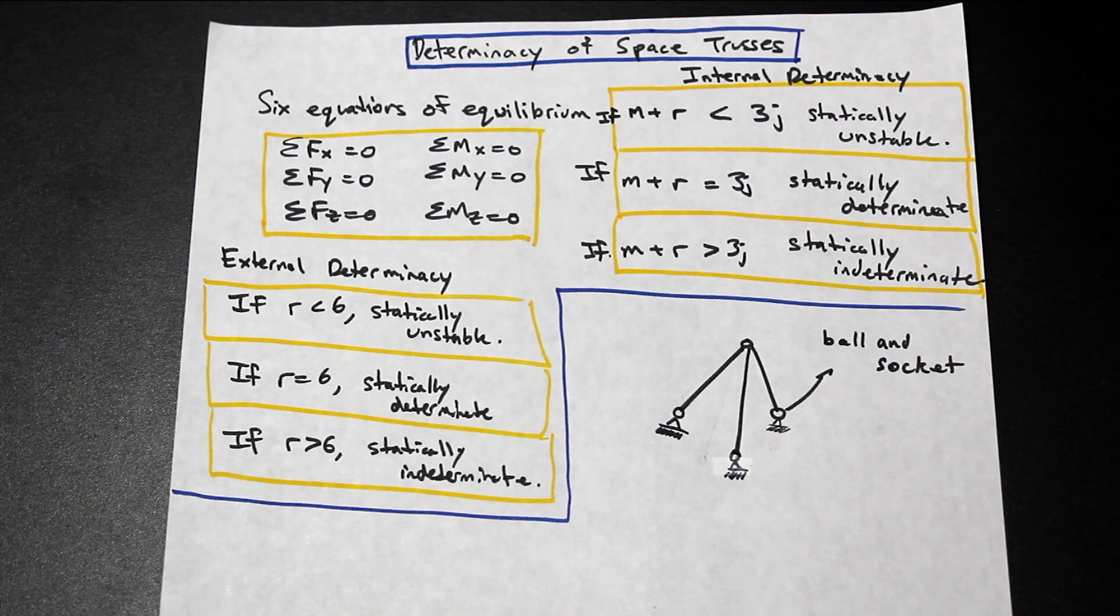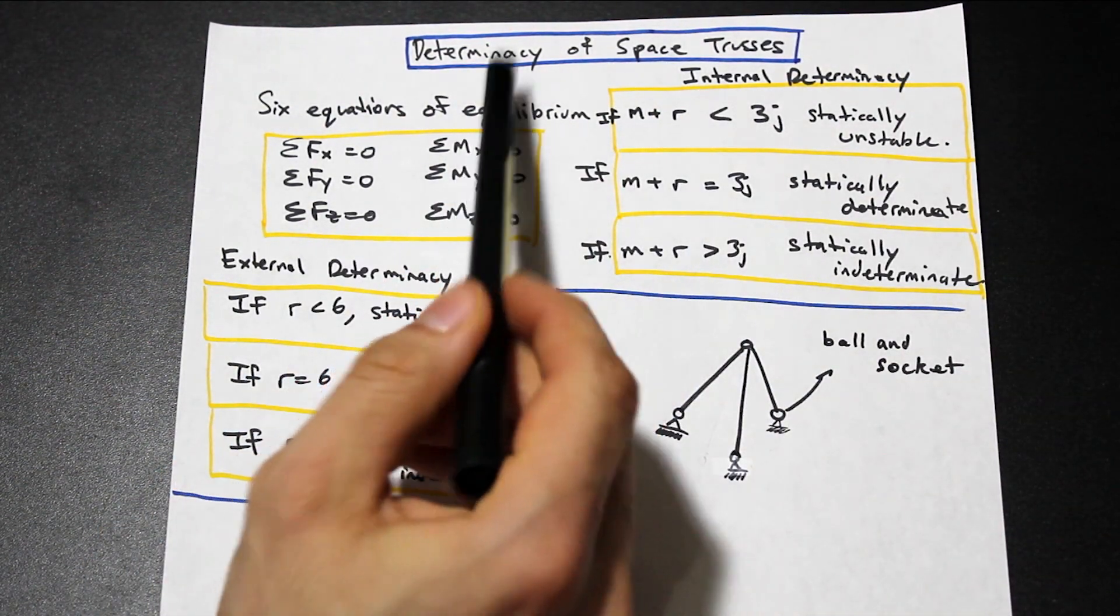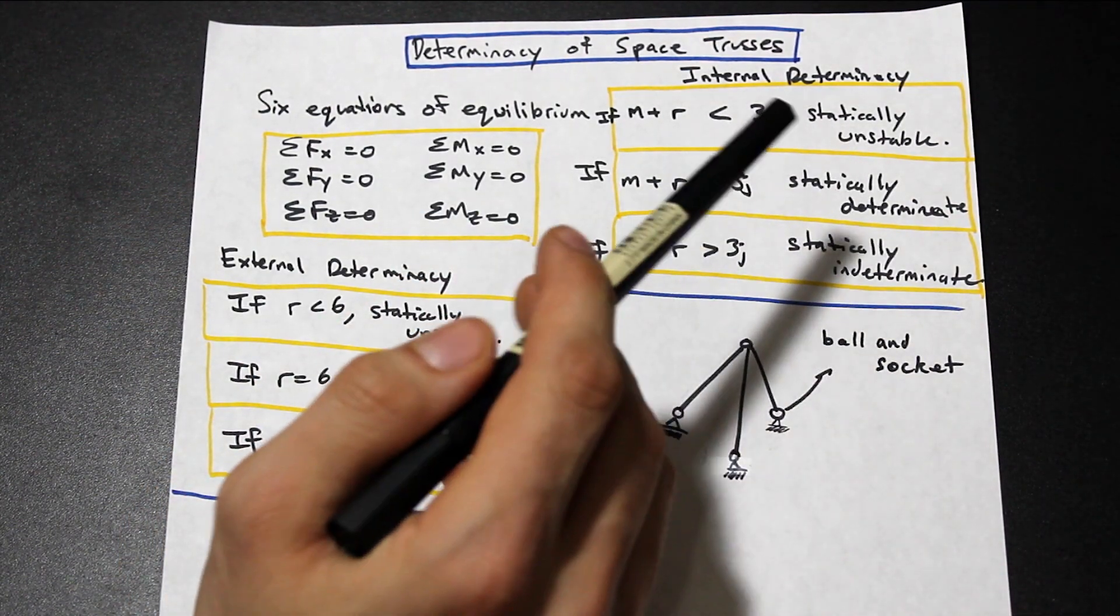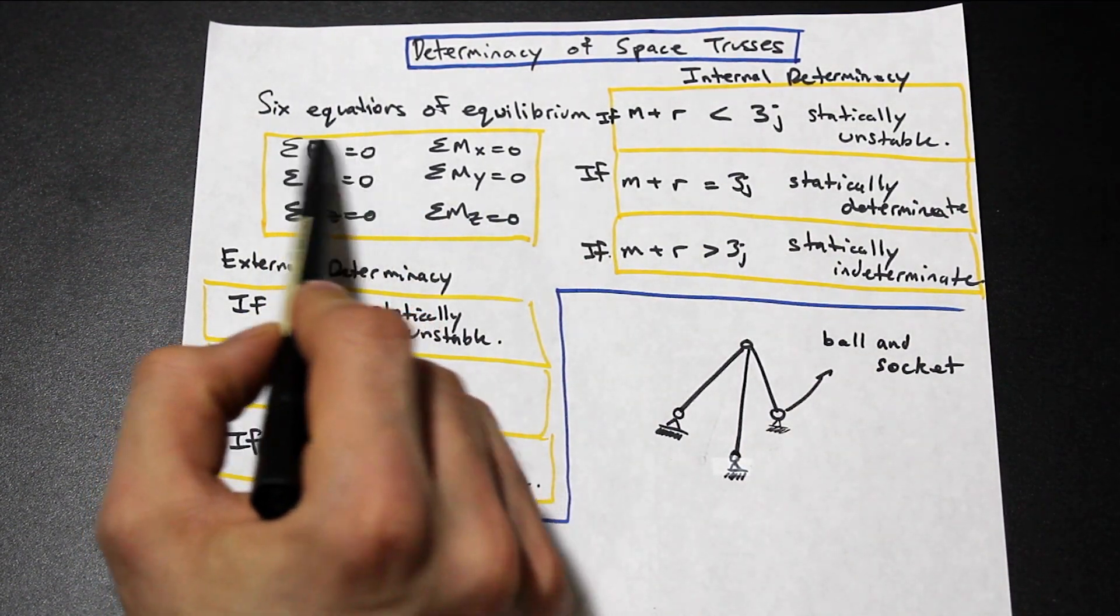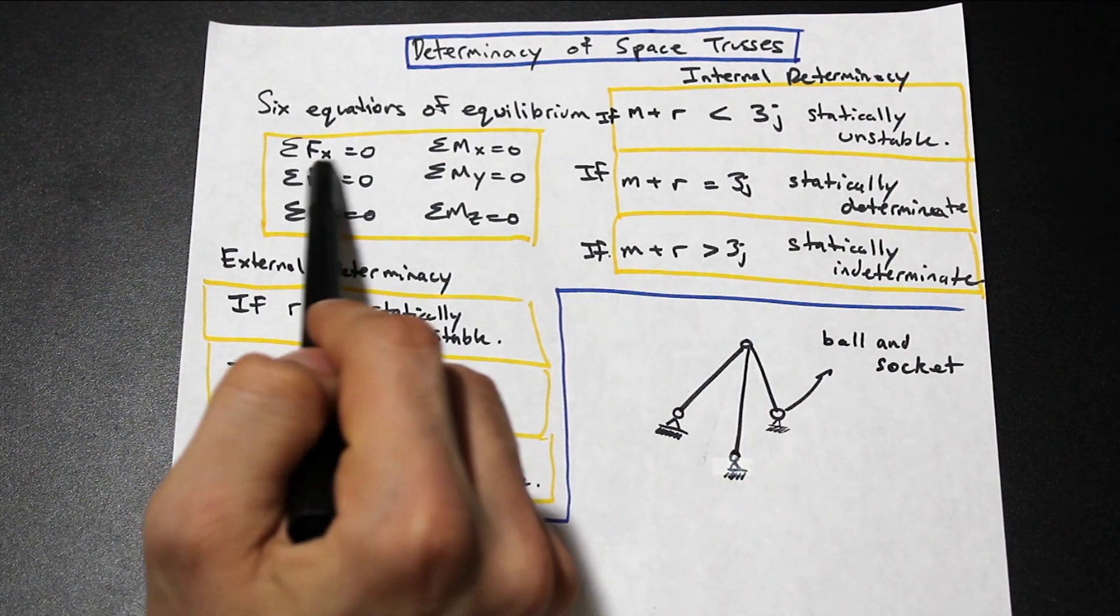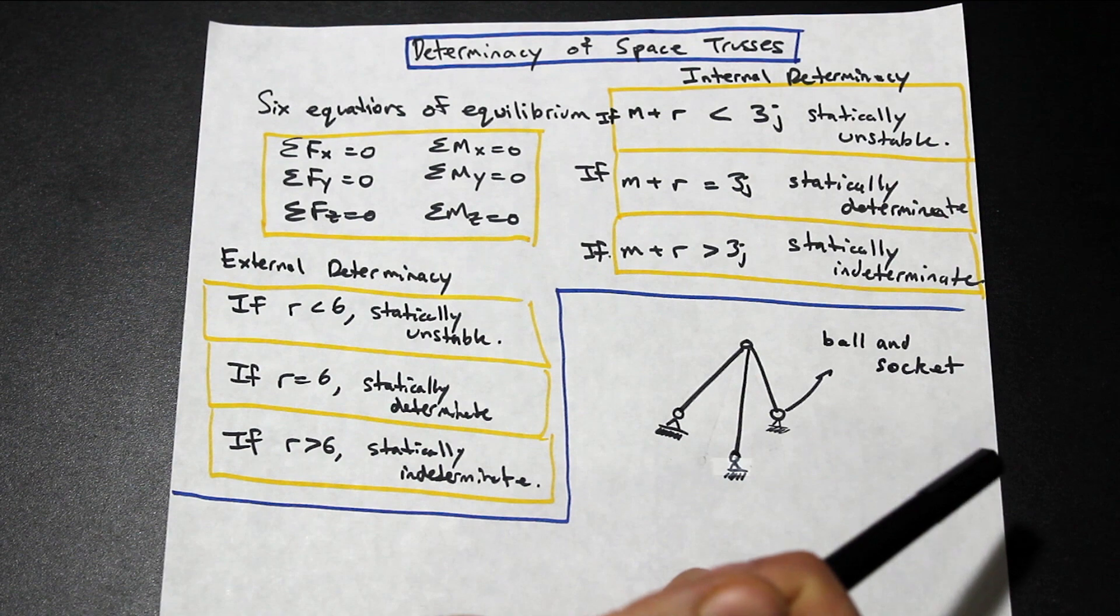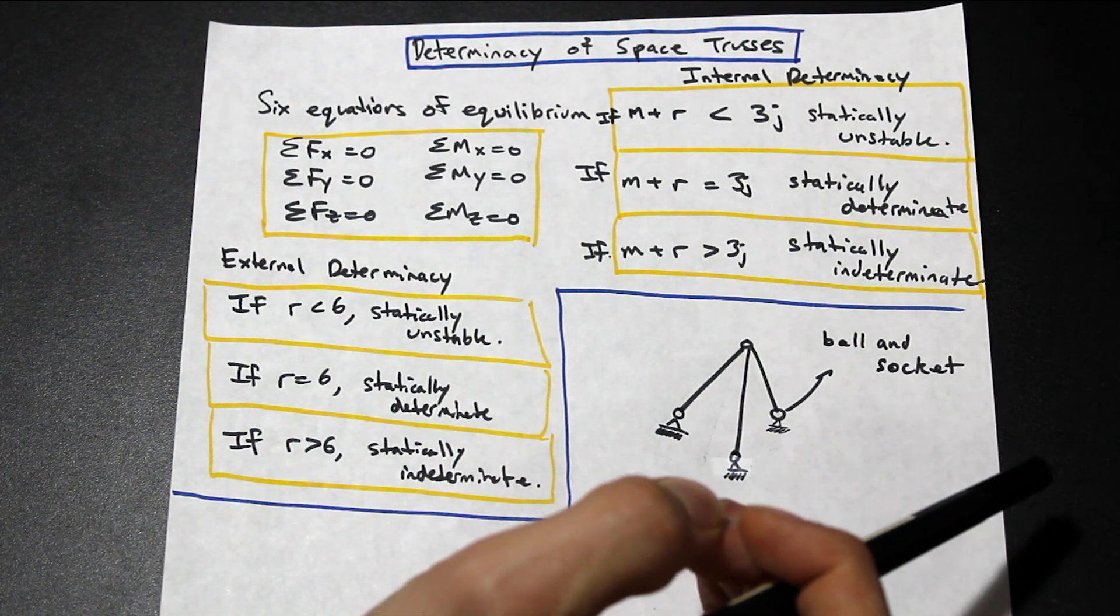So if you remember in 2D, when we did 2D determinacy in plane frames, we had three equilibrium equations that we needed to satisfy. So we needed to satisfy that all the forces in x direction equals zero, all the forces in the y direction equals zero, and the sum of all the moments acting also equals zero, so that our equilibrium conditions are satisfied.